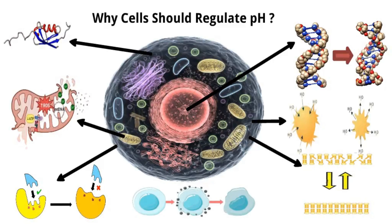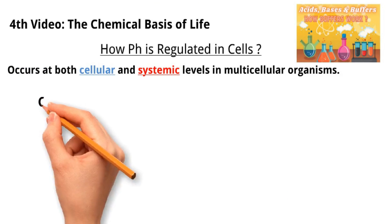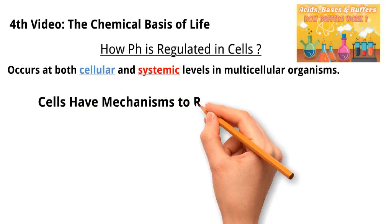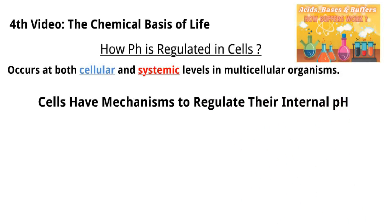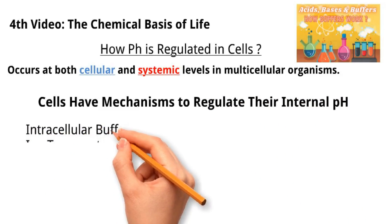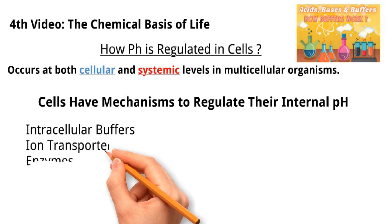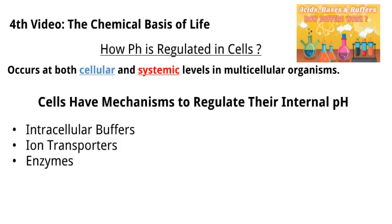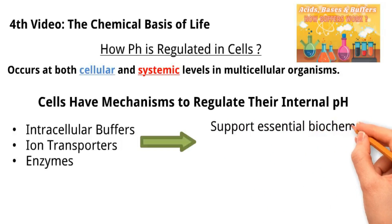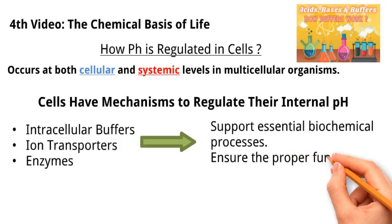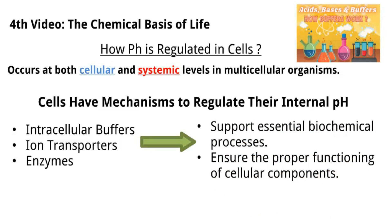Cellular stress. Fortunately, individual cells have mechanisms to regulate their internal pH. This involves the use of intracellular buffers, ion transporters, and enzymes that can influence the concentration of hydrogen ions and hydroxide ions within the cell. Cells actively maintain their internal environment to support essential biochemical processes and ensure the proper functioning of cellular components.